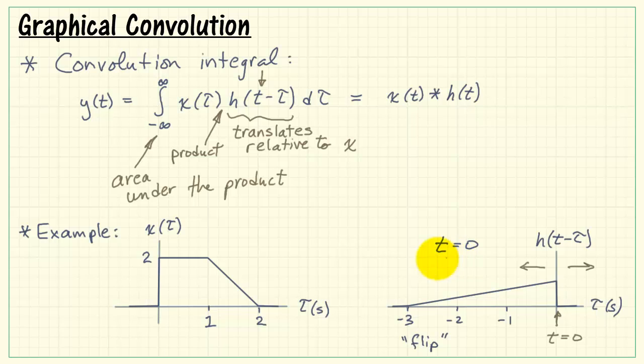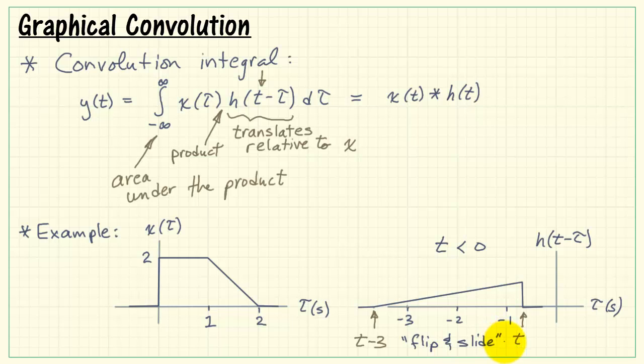Now, imagine that t is some negative value less than 0. I want to keep that general, just saying somewhere less than 0, and that's going to slide t back in the negative direction. This original trailing edge, which we know is 3 seconds away, we can write that as t minus 3. As we vary t, then this picture will slide back and forth. This gives us the familiar interpretation for graphical convolution as the flip and slide procedure.